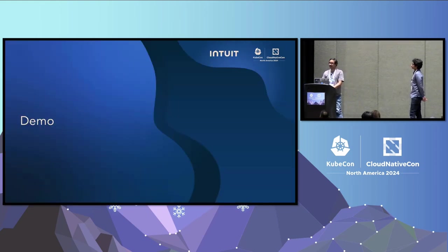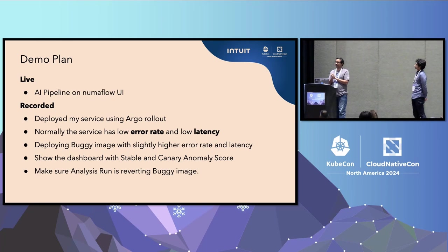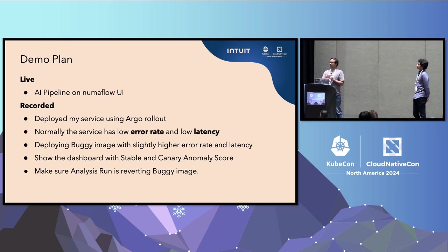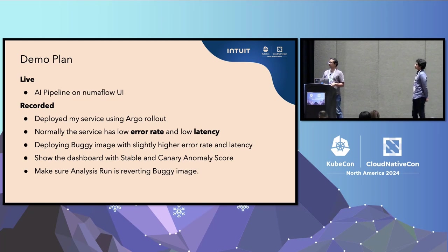Let's get into the fun part — the demo. I'm going to do two demos. The first is a live demo where I'll show the real-time AI pipeline currently getting metrics from Prometheus and regenerating anomaly scores for each service. The second is a recorded demo showing how progressive delivery happens using the anomaly score.